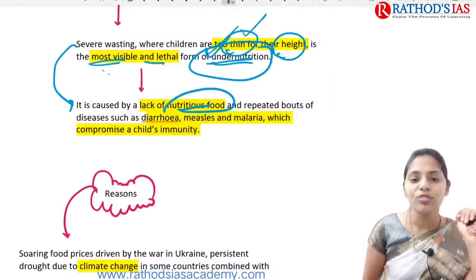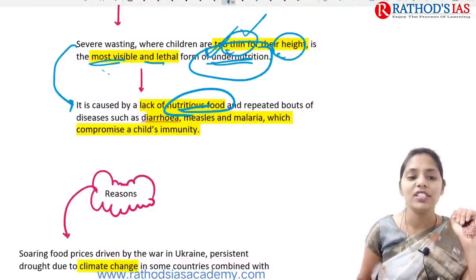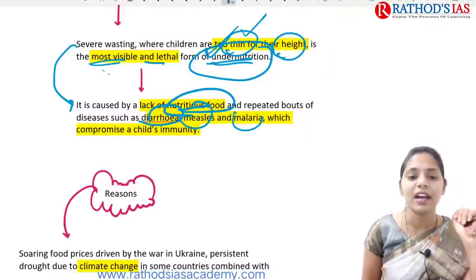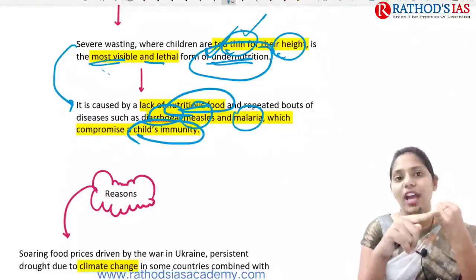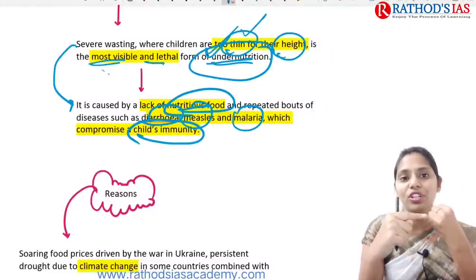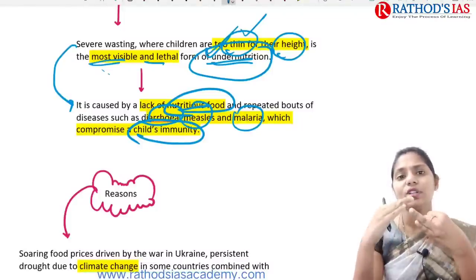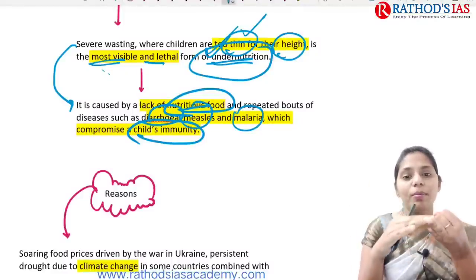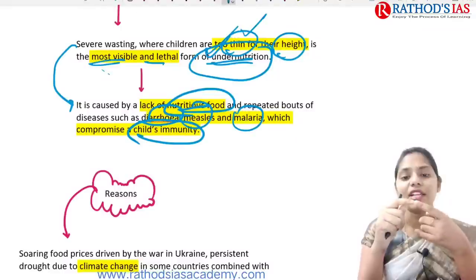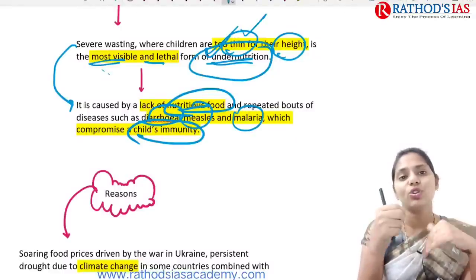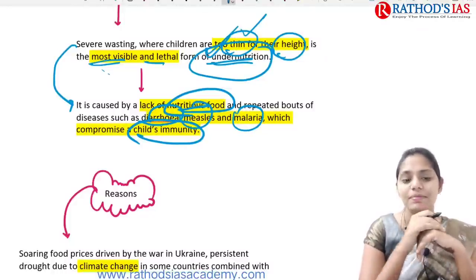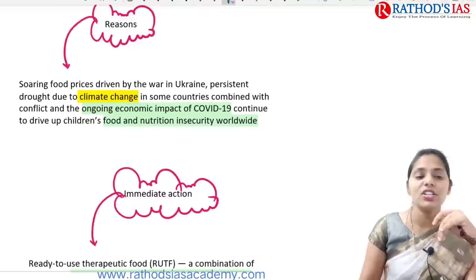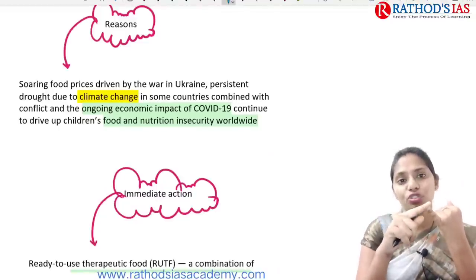Severe wasting is mainly caused by lack of nutritious food and repeated bouts of diseases like diarrhea, measles, and malaria, which compromise the child's immunity. On one side there is no proper nutrition; on the other side children are suffering from diseases, leading to high incidence of wasting.